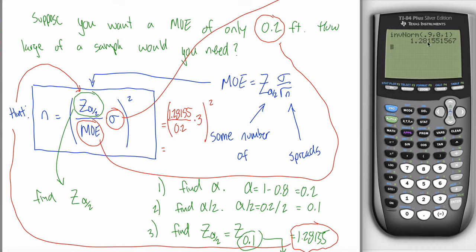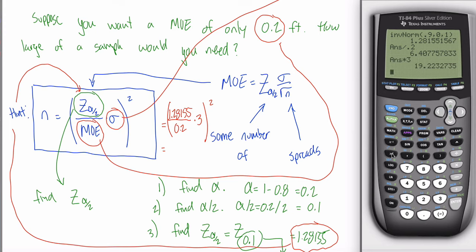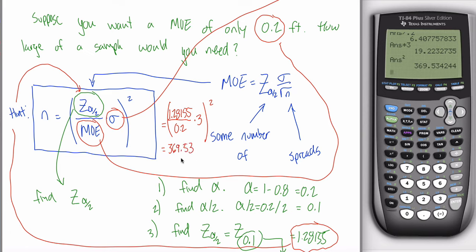369.53. If you put that on a quiz or midterm, I'm really happy — most people don't get this right, you'd get full credit. That's your answer and you're done.